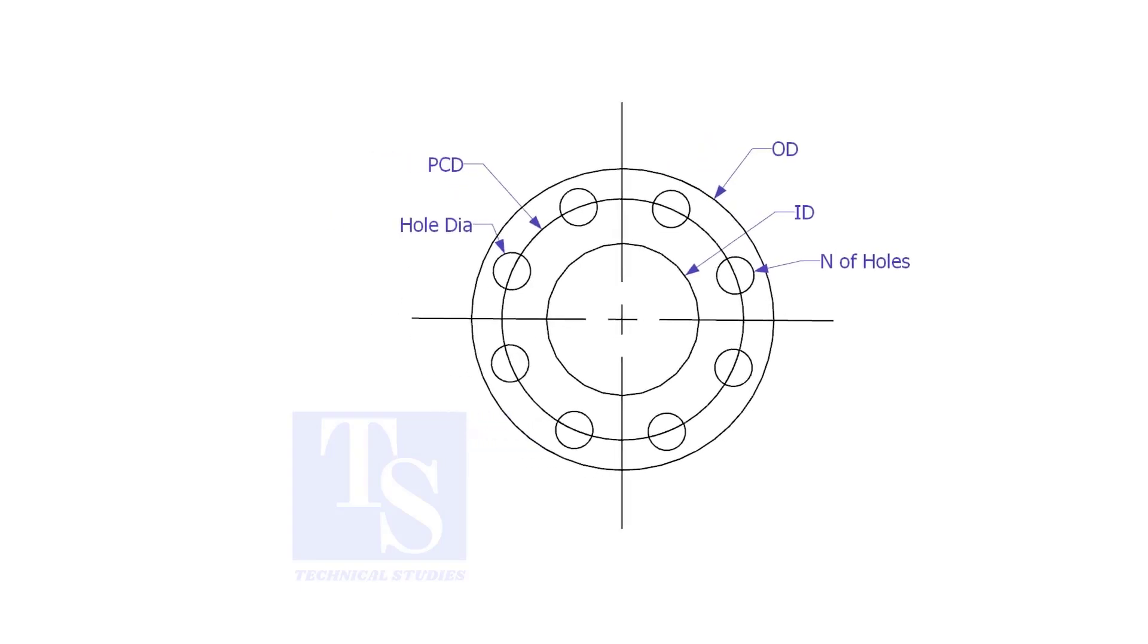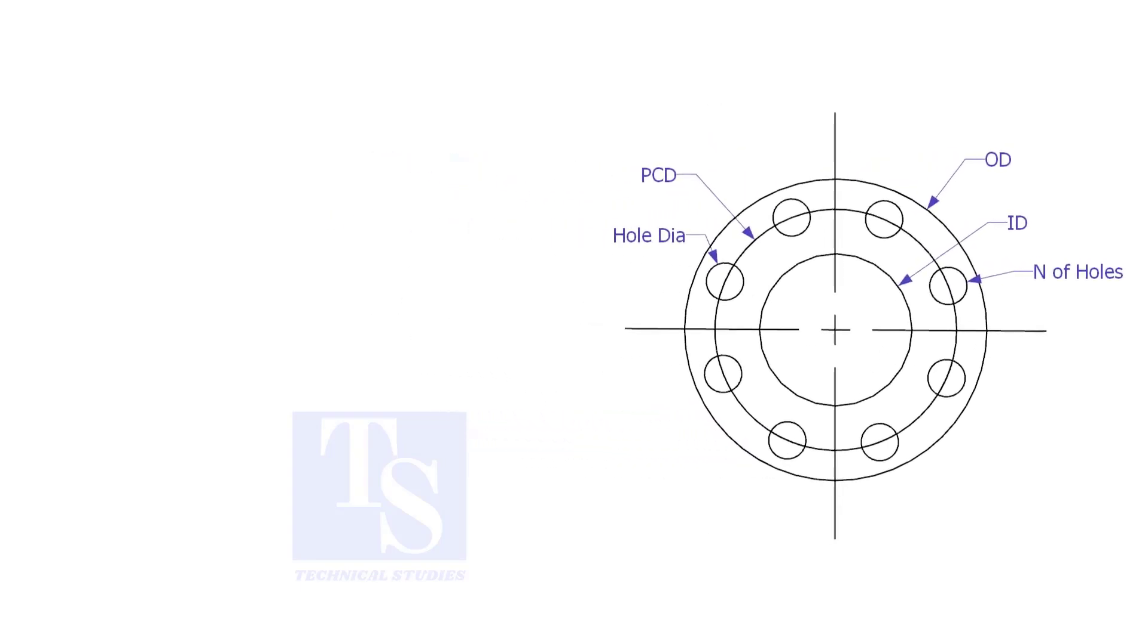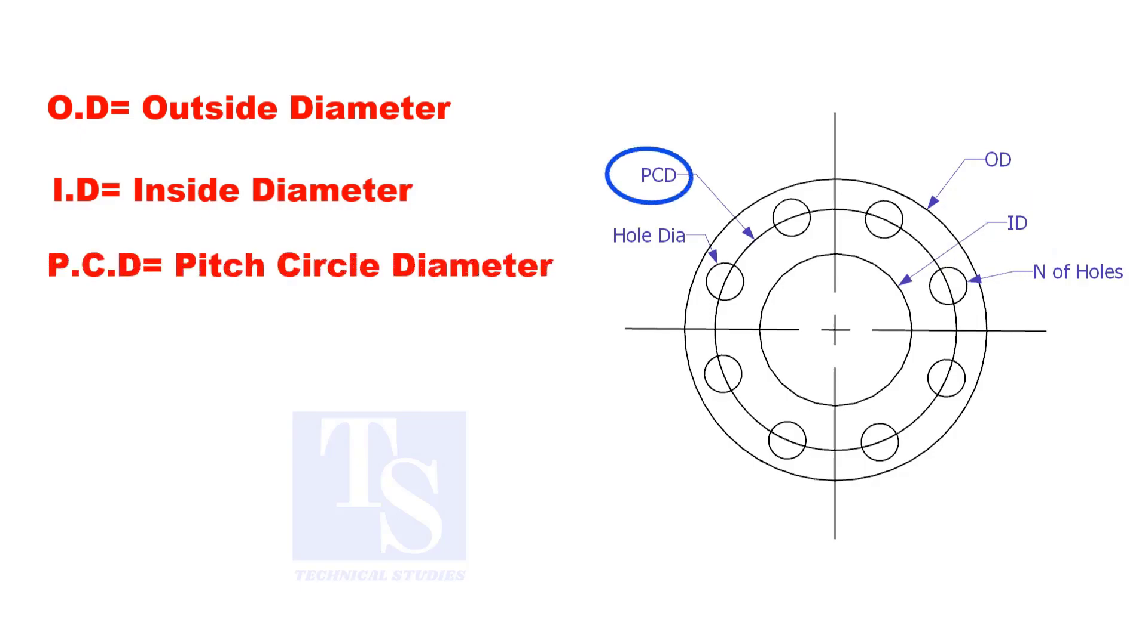To make a plate flange, we need to know the following things: OD, the outside diameter; ID, the inside diameter; PCD, the pitch circle diameter; number of holes; and the hole size.